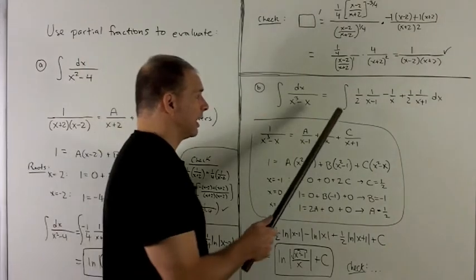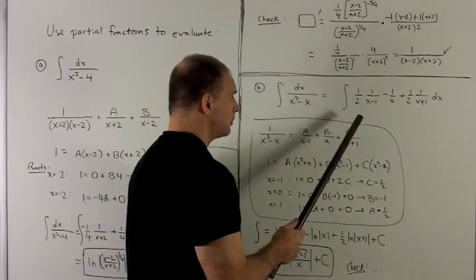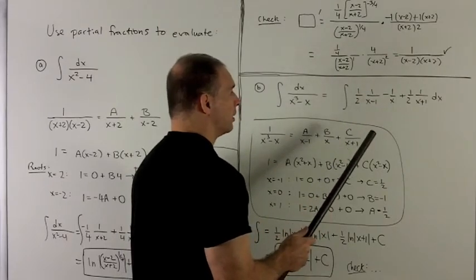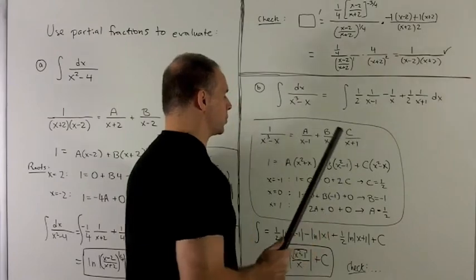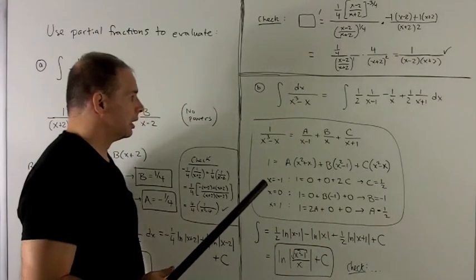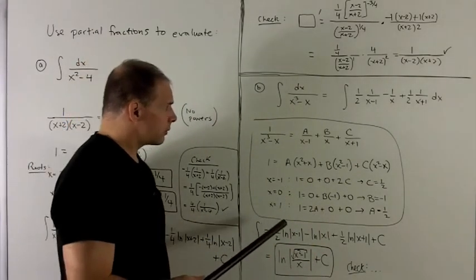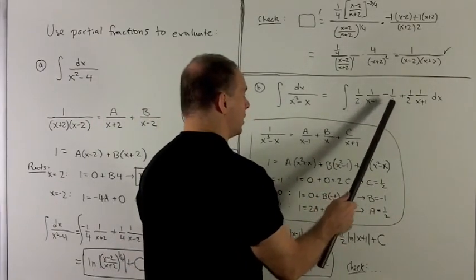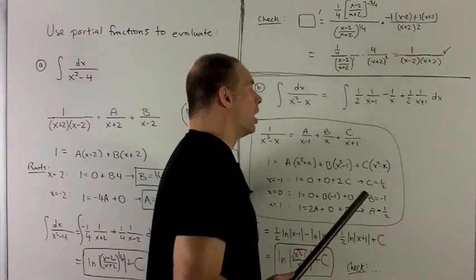So we're looking at the antiderivative of a half, 1 over x minus 1, minus 1 over x, plus a half, 1 over x plus 1. So we take a look at each of these. If you note, the derivative of each denominator is just going to be equal to 1.